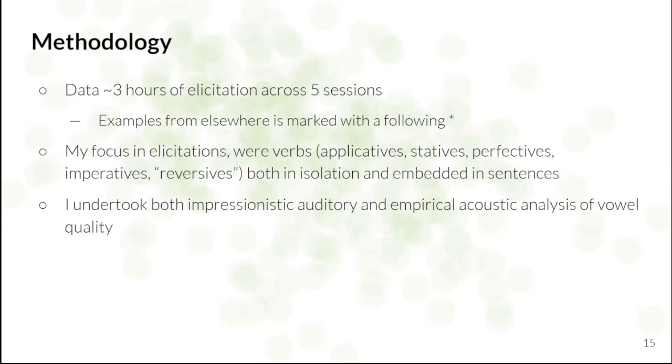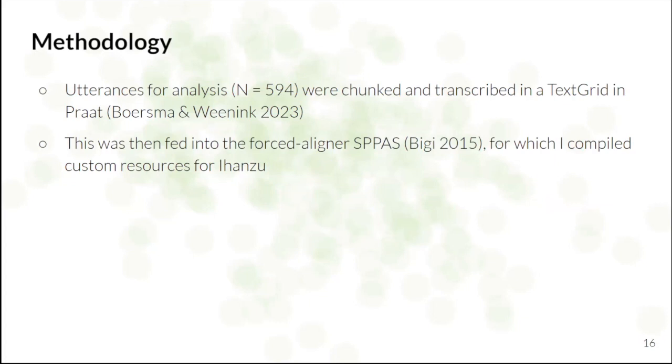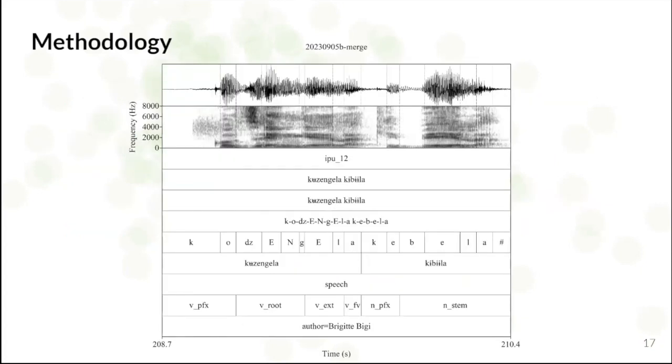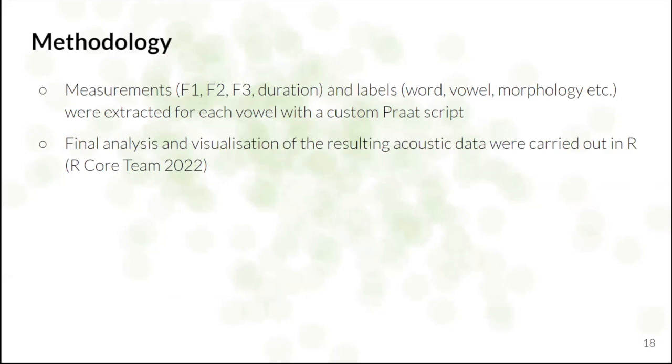And yes, I undertook both impressionistic, auditory, and empirical acoustic analysis of vowel qualities. So utterances were chunked and transcribed in a TextGrid. This was then fed into a forced aligner, for which I had to compile custom resources for Ihanzu, because, of course, there's no out-of-the-box compatibility for Ihanzu. And I manually corrected each of the vowel tokens in my data, then added an extra tier to the TextGrid with morphological segmentation, to the best of my understanding. So I got something like this out the other side. And then, using a Praat script, extracted various measurements, of course, formant values being important, and all of the subsequent analysis and visualization was done in R.